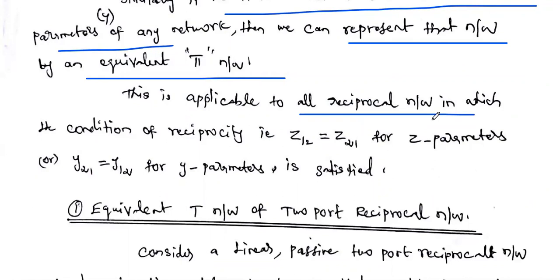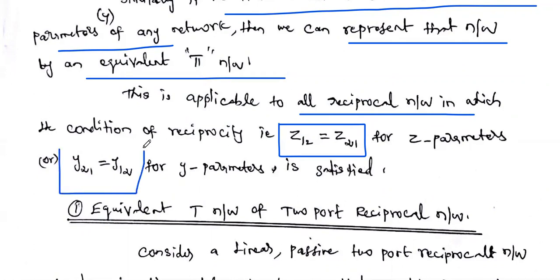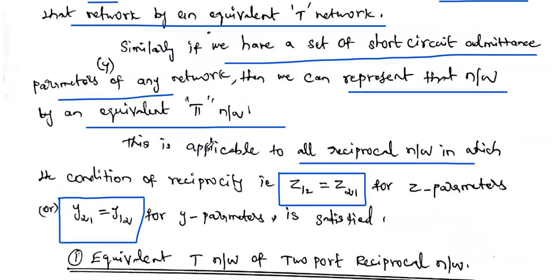We discussed reciprocity and symmetrical conditions for the two-port network in previous videos. If a network satisfies the reciprocity theorem, it is called a reciprocal network. For example, in terms of Z-parameter, if Z12 and Z21 values are equal, the two-port network is called a reciprocal network. Similarly, in terms of Y-parameter, if Y12 and Y21 are equal, it is a reciprocal network. For that reciprocal network, we can represent either Pi structure or T structure.